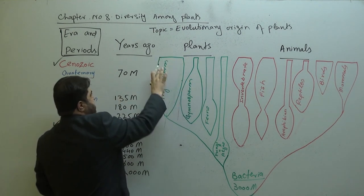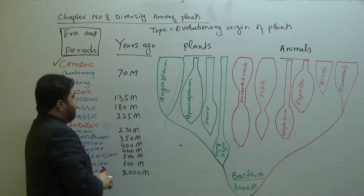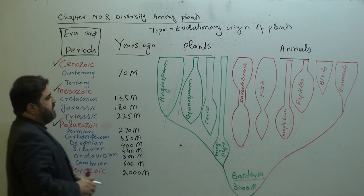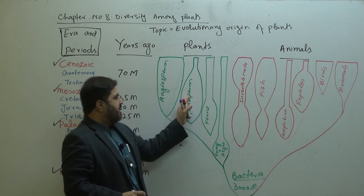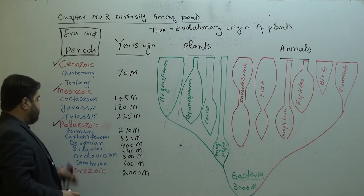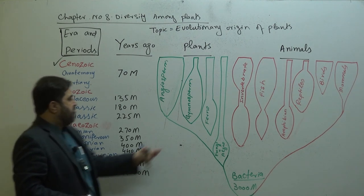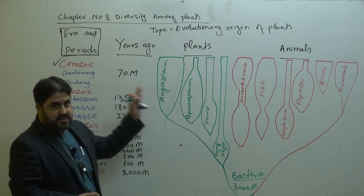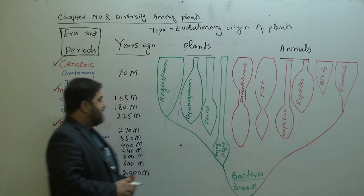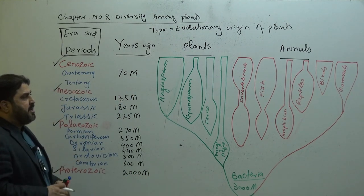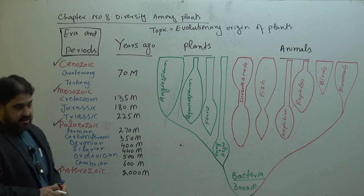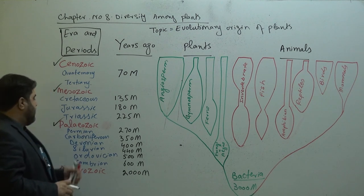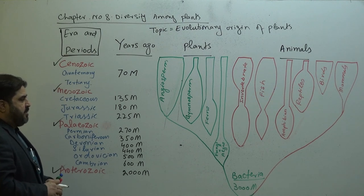Angiosperms dominated in the Cenozoic era. In the Mesozoic era, angiosperms are also dominant and most abundant. In the Paleozoic era, ferns, algae, and fungi dominated. On the animal side, in the Cenozoic era invertebrates, birds, and mammals dominated; in the Mesozoic era reptiles dominated; and in the Paleozoic era amphibians dominated.